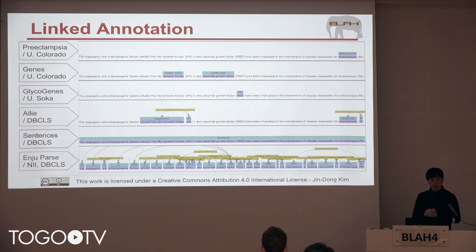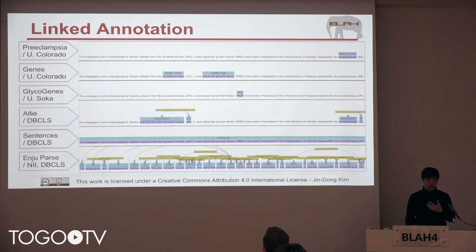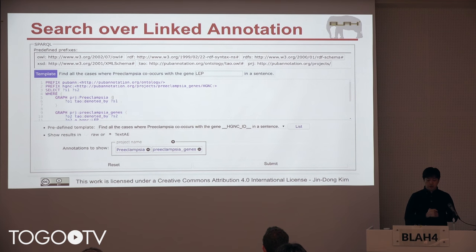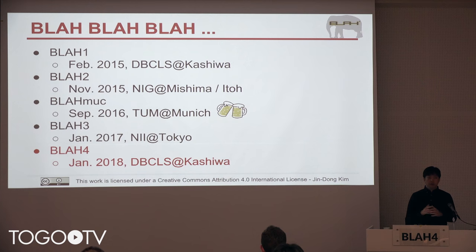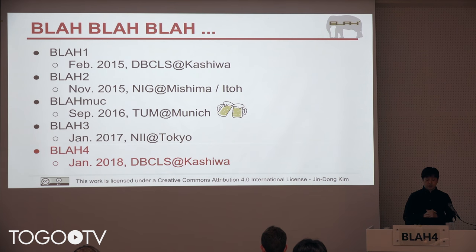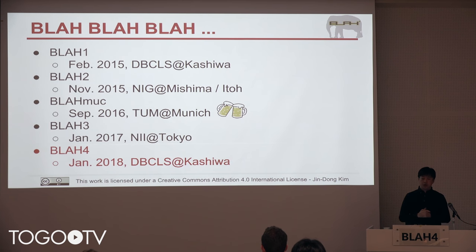With this picture in mind, we have been collecting annotations and developing applications on those connected annotations. One of the applications would be searching over linked multi-layer annotations using languages like SPARQL. We have been organizing this BLOB event three or four times. The first was held at DBCLS in February 2015, the second at Mishima National Institute of Genetics in November 2015, and there was a spin-off BLOB event in Munich in 2016 during Oktoberfest.